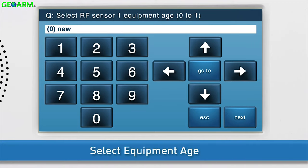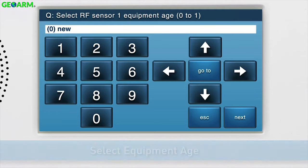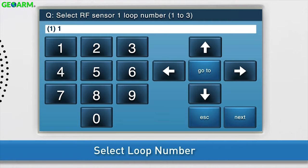Select the equipment age. Since this is a new 2GIG contact, leave the selection as 0 new. Press the down arrow to go to the next sub-question. Next, select the loop number. The carbon monoxide detector uses loop number 1, so we can leave the default option as is. Press the down arrow to go to the next sub-question.